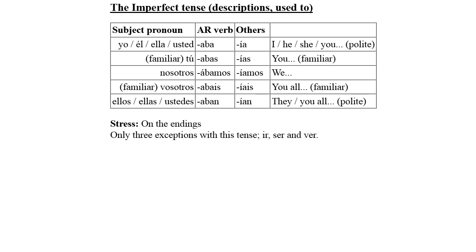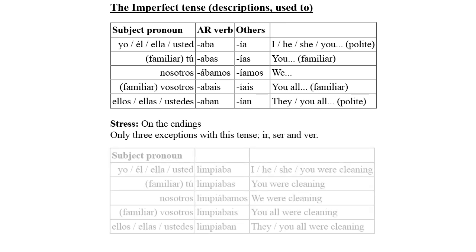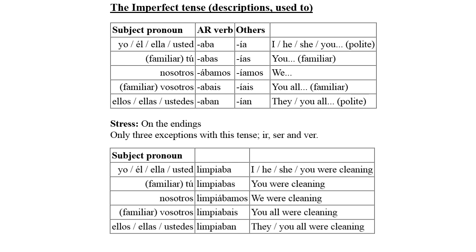Let's practice with the verb LIMPIAR, which means to clean. As it is an AR verb, I use the endings that start with an A. To say 'I was cleaning,' I can say LIMPIABA. Also, to say 'he/she/you were cleaning,' the word is still LIMPIABA. The TÚ form is LIMPIABAS. They/you all were cleaning is LIMPIABAN. And we were cleaning is LIMPIÁBAMOS. For the VOSOTROS form, I can still use that trick — I replace the MOS part with IS and keep the stress in the same place: LIMPIÁBAMOS becomes LIMPIABAIS.